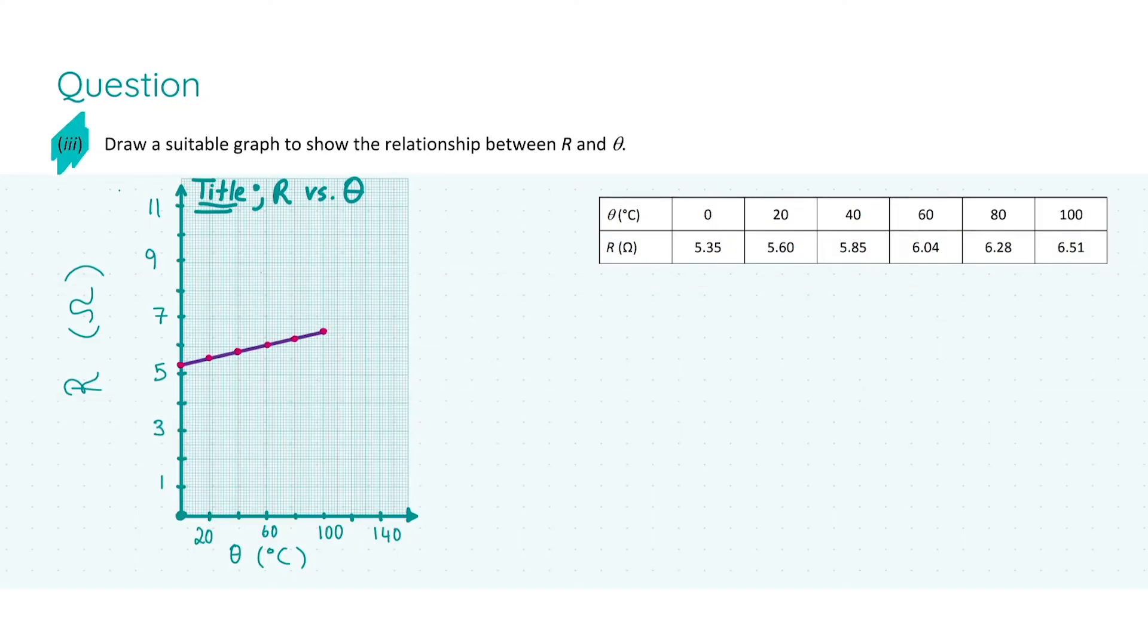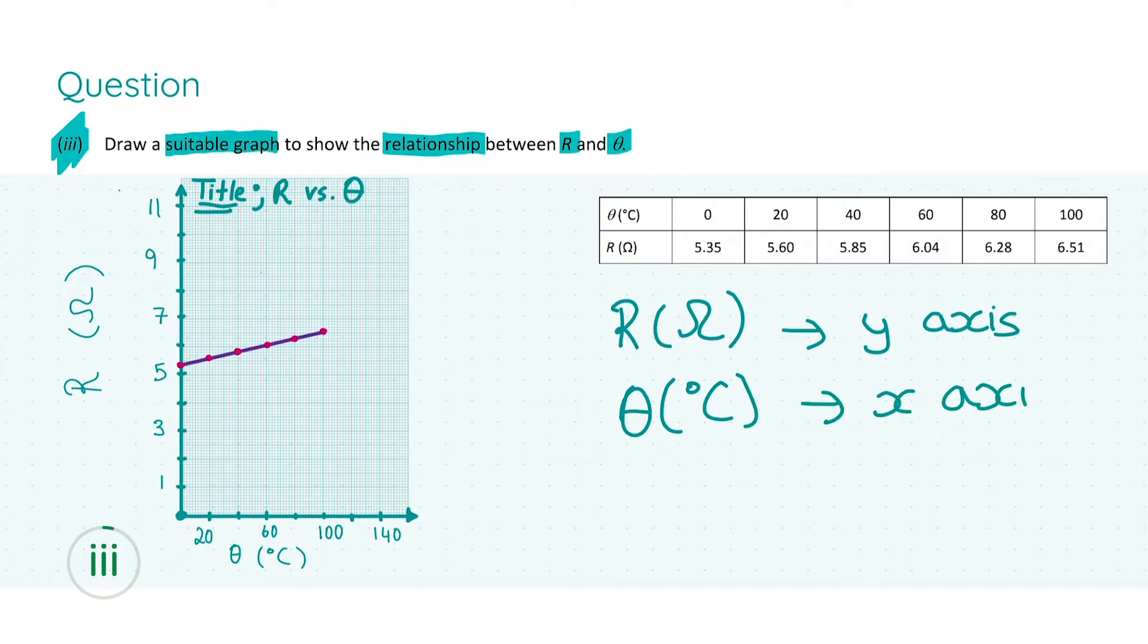Moving on to part three, we are asked to draw a suitable graph to show the relationship between R and θ. We're drawing resistance versus temperature. Resistance is the dependent variable, so it goes on the y-axis, as the value of resistance varies with the temperature values originally set by the student. For resistance R measured in ohms, we put them on the y-axis, and for θ measured in degrees Celsius, we put them on the x-axis. If you have time in the exam, copy these values into your solution booklet to stay calm and focused.